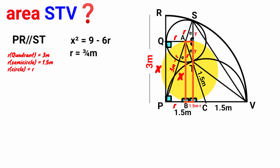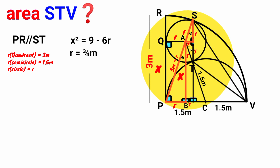Looking at this quadrilateral, three of its angles are right angles, making it a rectangle. Opposite sides of a rectangle are equal, so if we let this side be z, this opposite side must also be z. Now look at these two right-angle triangles — both have a right angle and an angle e, so they are similar. Taking the ratio of corresponding sides: z divided by r must equal r divided by (3 − r).